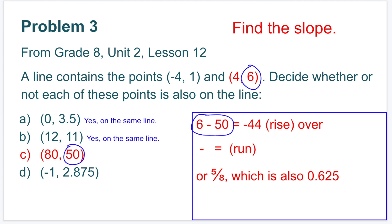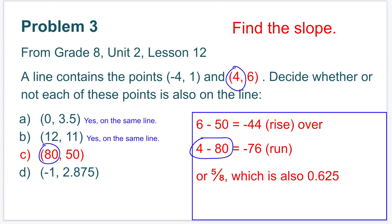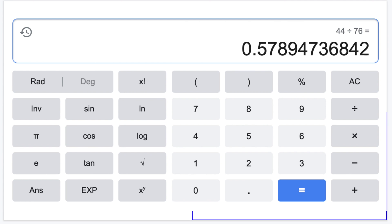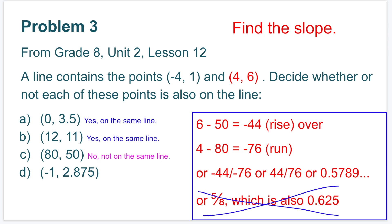C. 6 minus 50 equals negative 44 — that's the difference in the y coordinates — over 4 minus 80 — that's the difference in the x coordinates. So negative 44 over negative 76. A negative divided by a negative is the same thing as a positive, so it's equivalent to 44 over 76, or 44 divided by 76. That equals approximately 0.57894, which is not equivalent to 0.625. So coordinates 80 and 50 will not be on the same line.